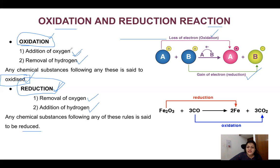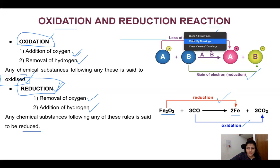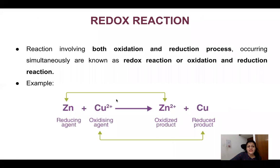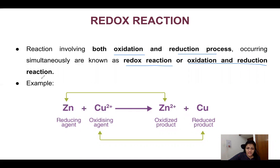Now, looking at an example: on the reactant side we have carbon monoxide, and on the product side it is converted into carbon dioxide. There is an addition of oxygen — what does that mean? That is oxidation. Whereas Fe₂O₃ on the reactant side becomes iron — the removal of oxygen means reduction.